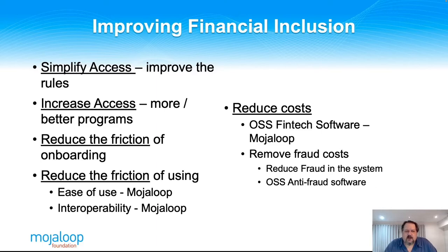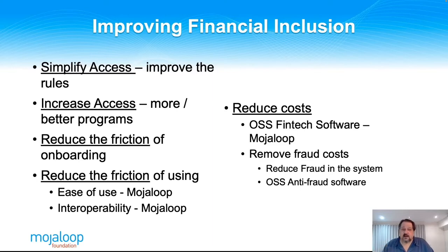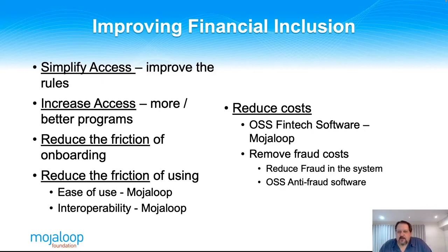First, there are many ways we would improve financial inclusion: simplify access and improve the rules for accessing it. Right now, some of the FATF rules and KYC processes are probably a little too stringent for people that don't have documentation — if you don't have an ID, you don't have an identity. There's been work on risk-based assessment models and increasing access through programs from the Gates Foundation and others. We also want to reduce the friction of onboarding — making it easier, simpler, and quicker for somebody to actually join a system, from identity verification to the overall process.